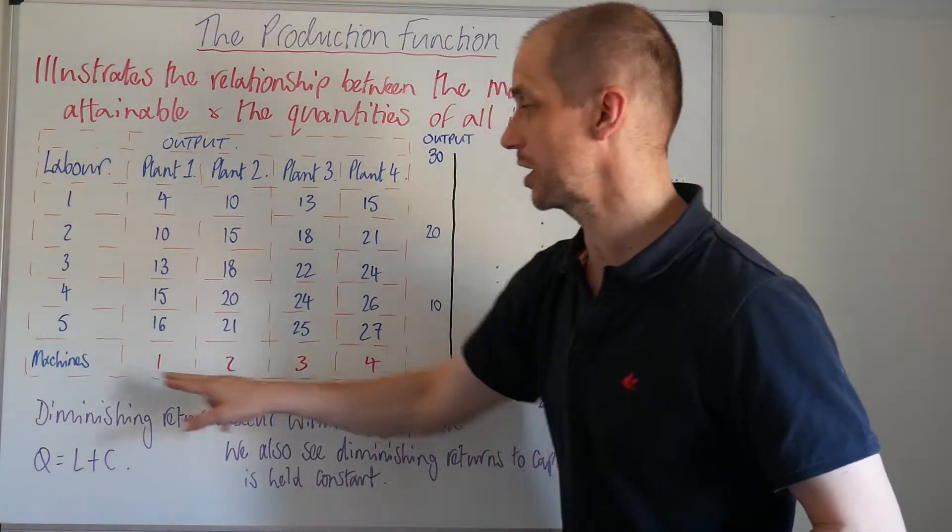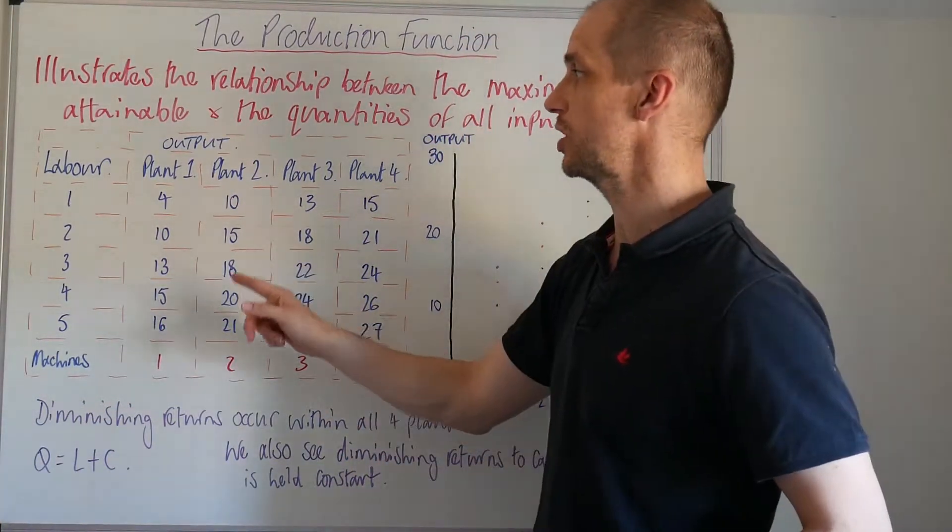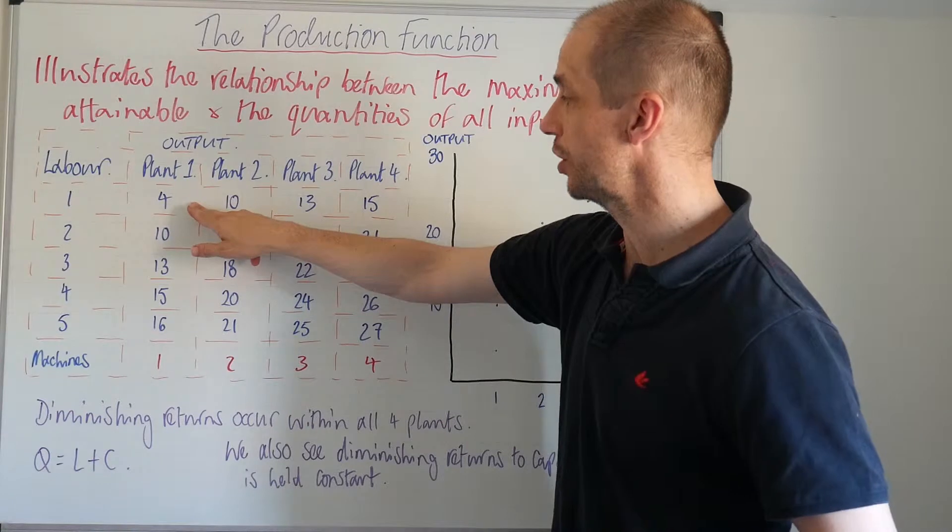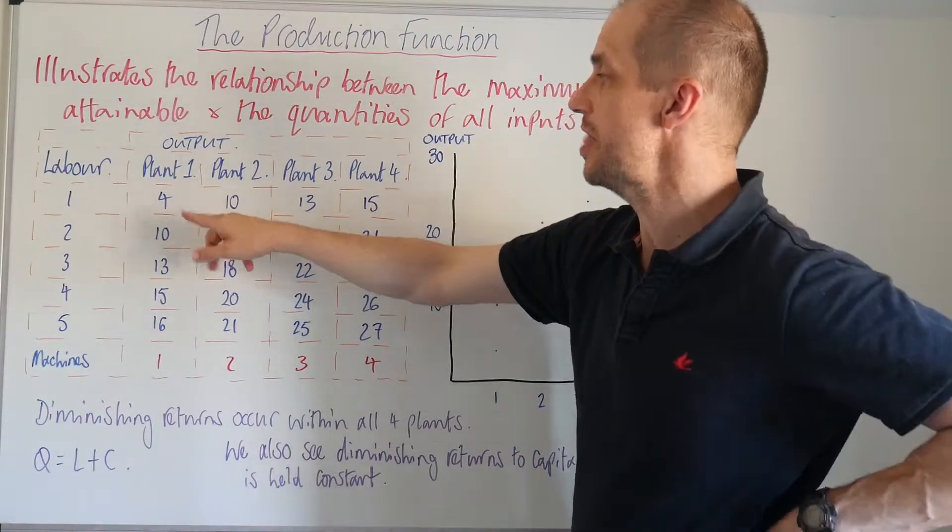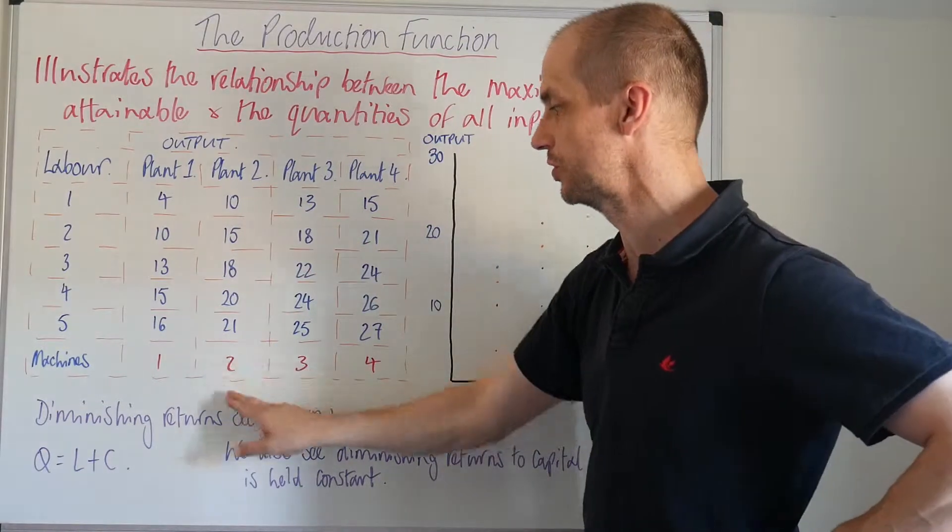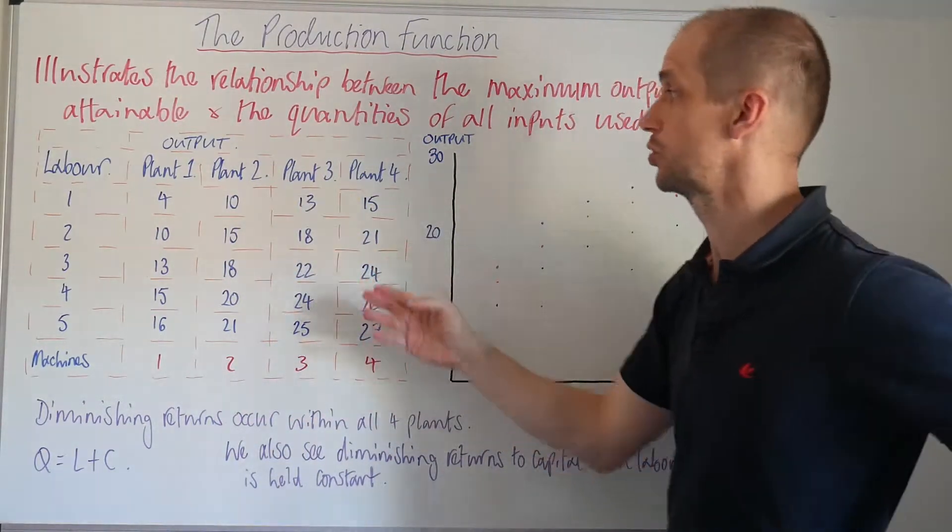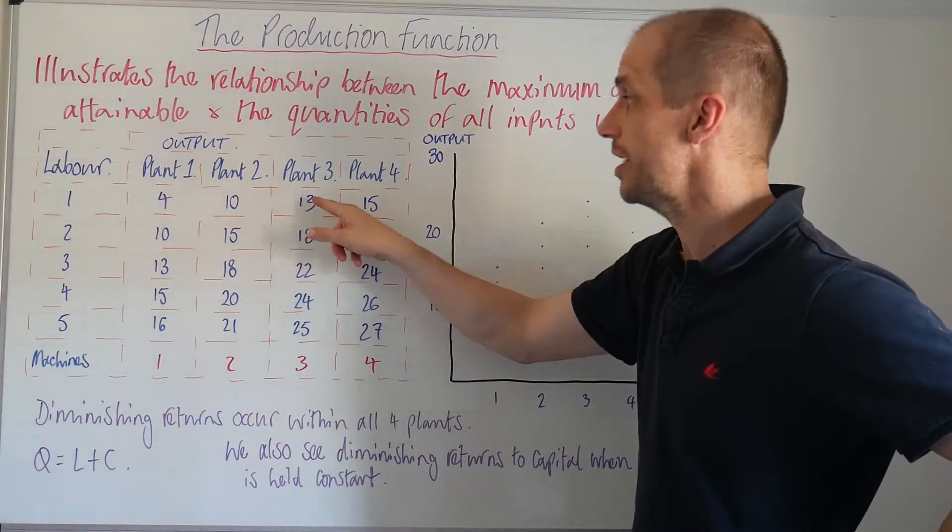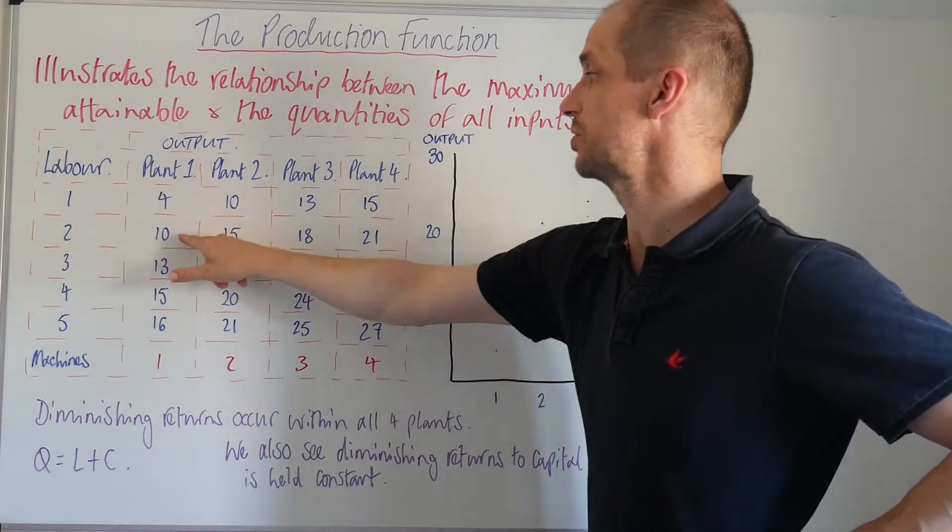Now also if we actually consider our capital goods, the machinery utilized here, what's also interesting is we see that initially as we employ just one laborer and then we have two capital goods used, two machines used, we see those increasing marginal returns but then they diminish thereafter once again.